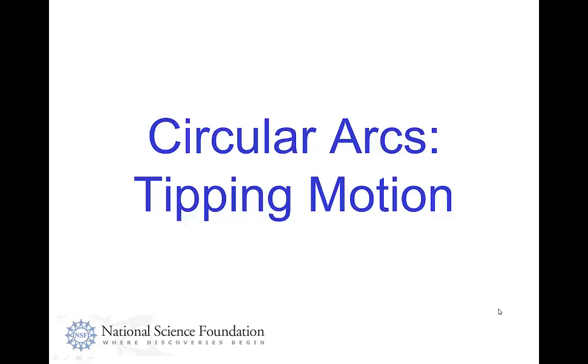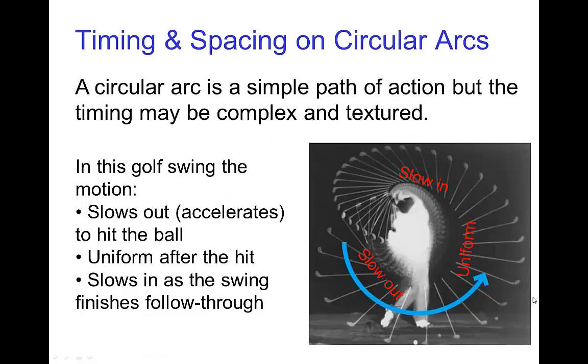Circular arcs tipping motion. There are many examples of motion that has a path of action that's a circular arc. Even though a circular arc is a fairly simple path of action, we can have all kinds of variety in the timing and spacing. This golf swing is an example. It's more or less a circular arc for most of the swing, but it has a lot of variety in the timing.